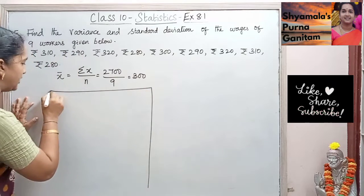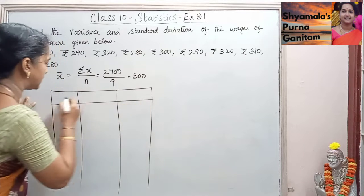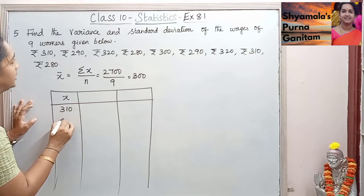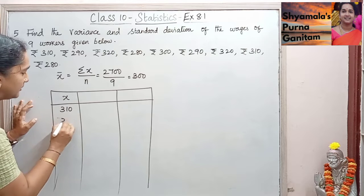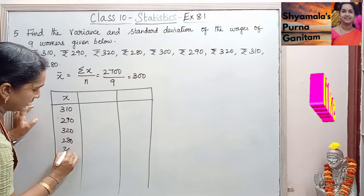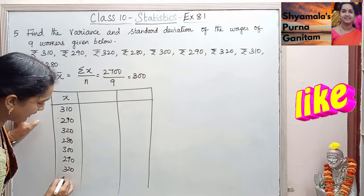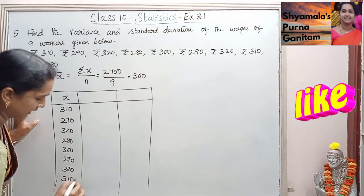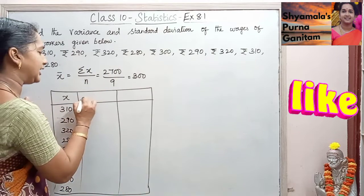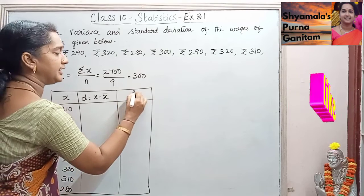Now we substitute this in the tabular column. First column is x — the 9 wages: 310, 290, 320, 280, 300, 290, 320, 310, and 280. Then d is defined as x minus x̄, and we also need to find d squared.